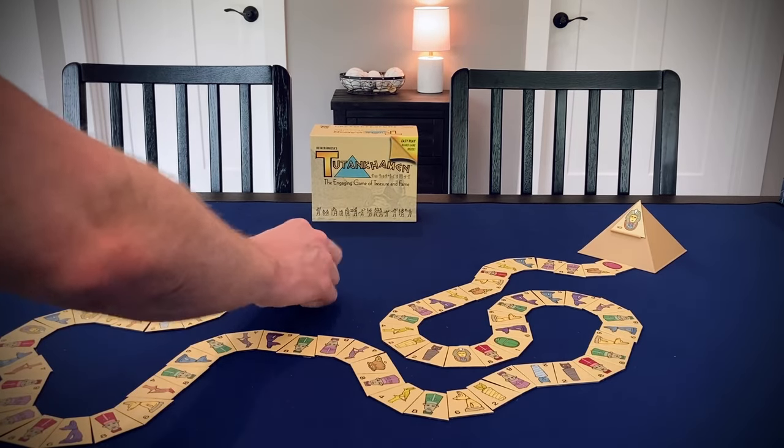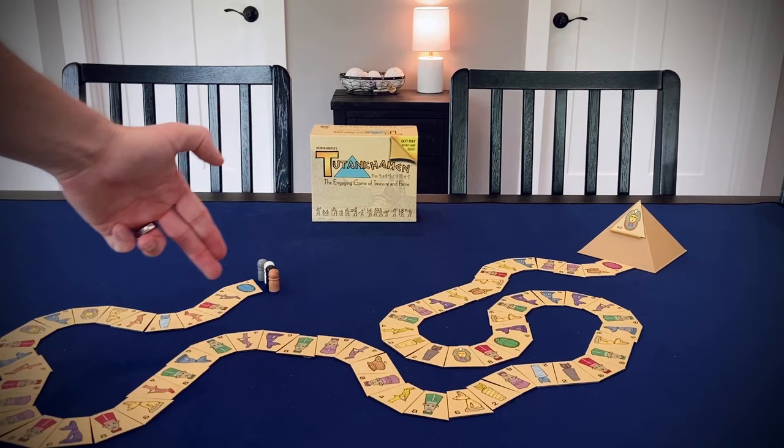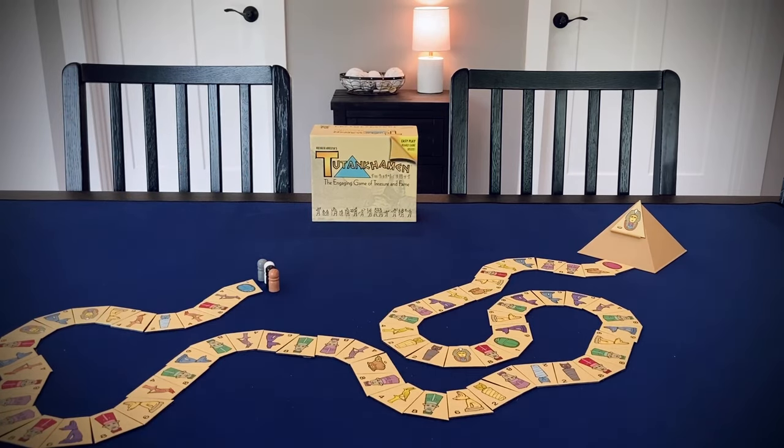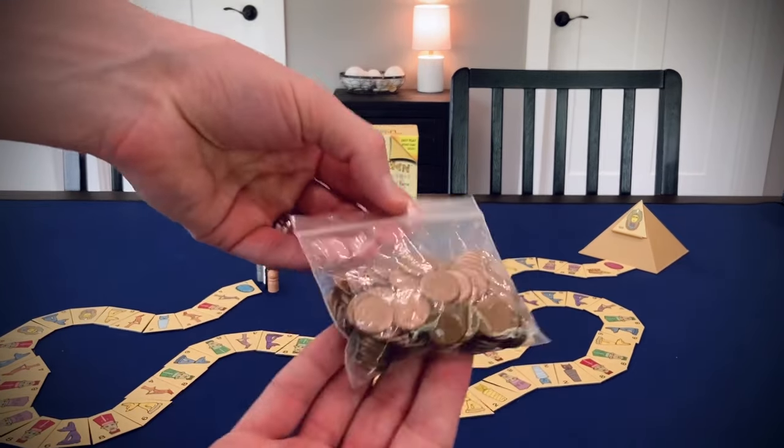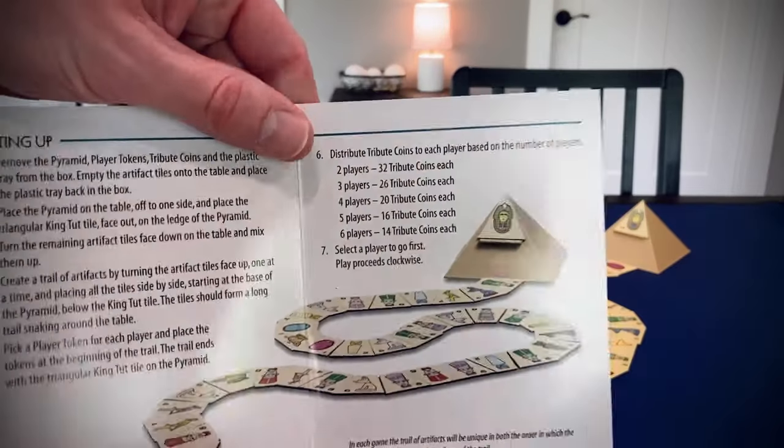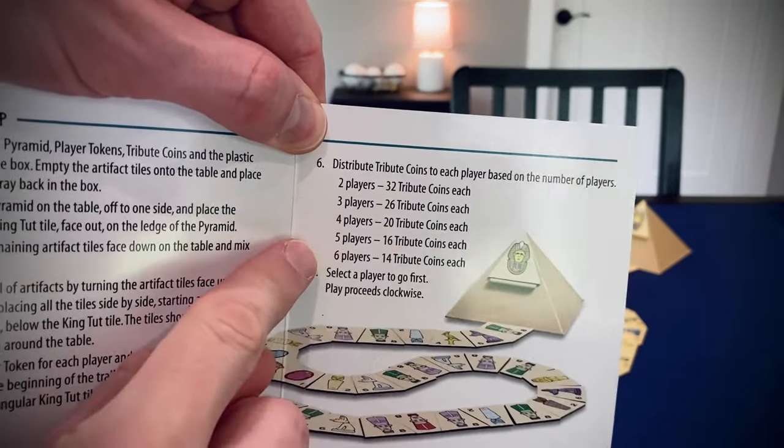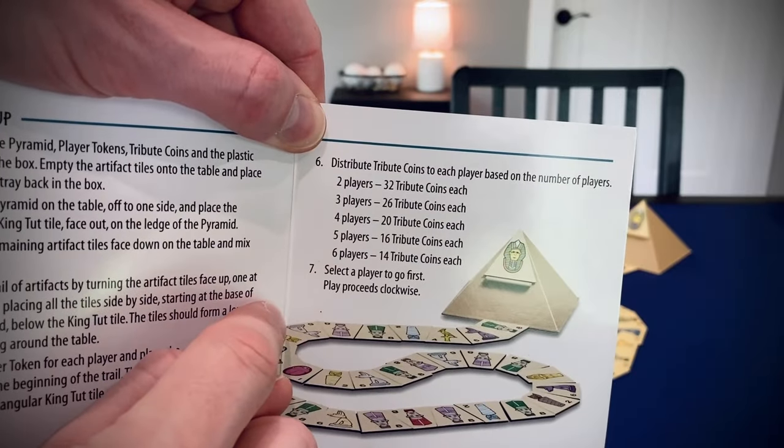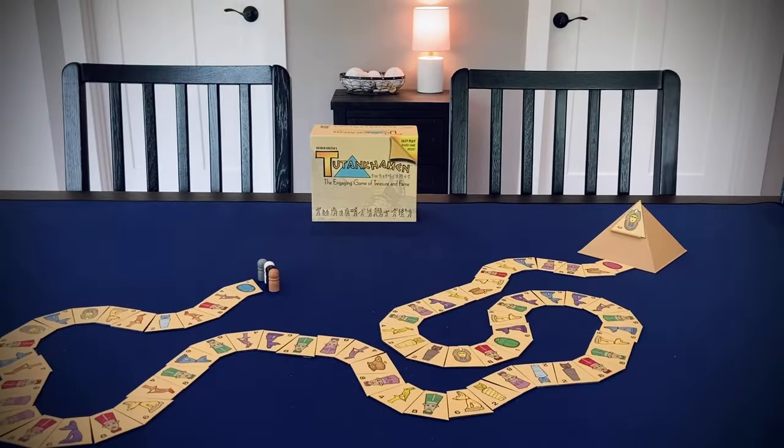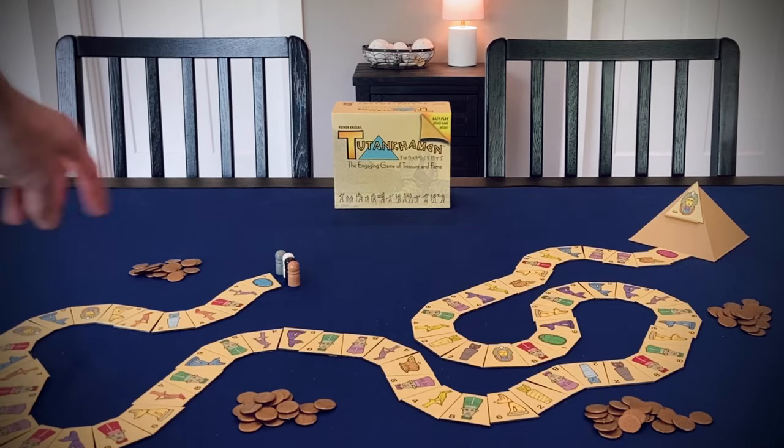Everybody gets a player color, and their pawn goes at the start of the path, and you will be moving toward the tomb. Finally, you're going to give each player a certain number of coins based on this table in the rulebook. So for a four-player game, everybody starts with 20 coins each, and you can see that's different depending on how many players are playing the game, but that's the only thing that changes for player count.